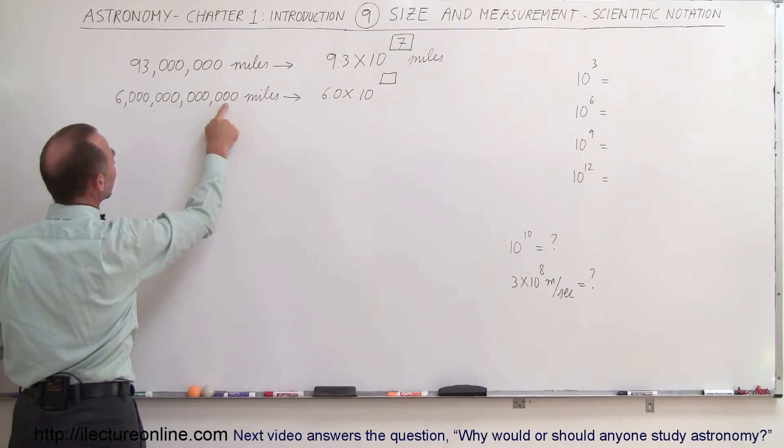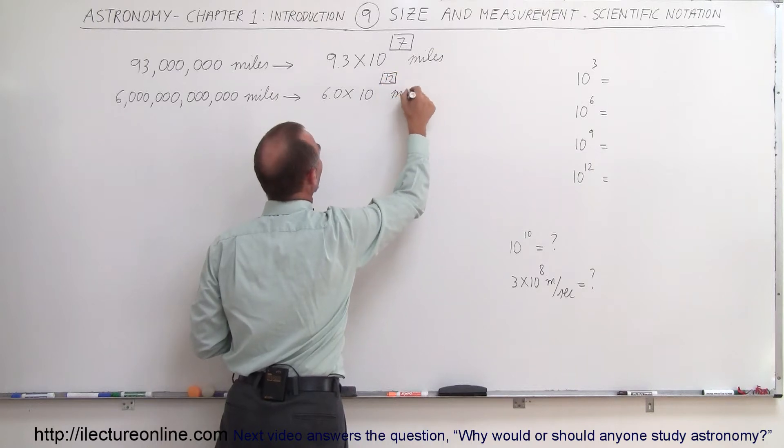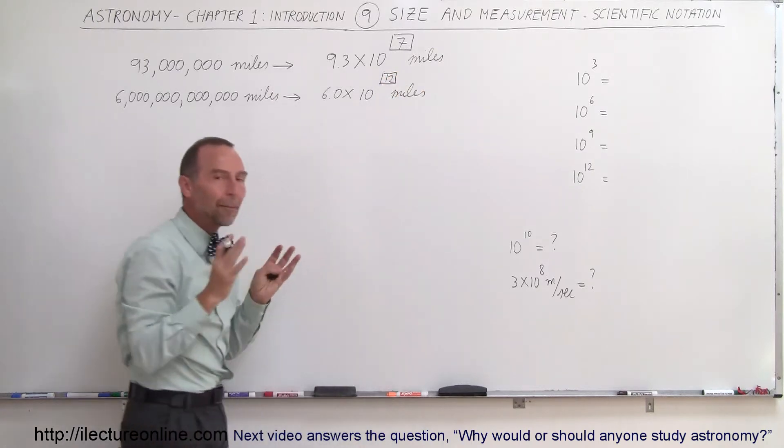6, 7, 8, 9, 10, 11, 12, so it becomes 6 times 10 to the 12th miles. And so that's how we write things in a more compact form.